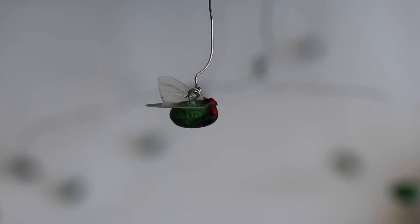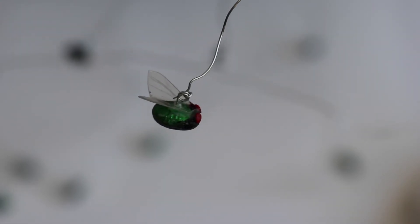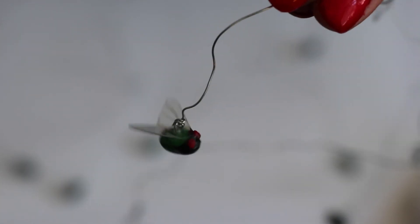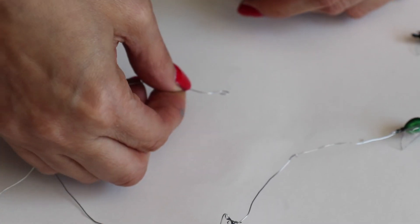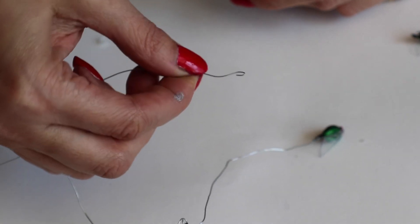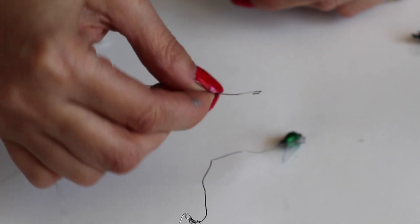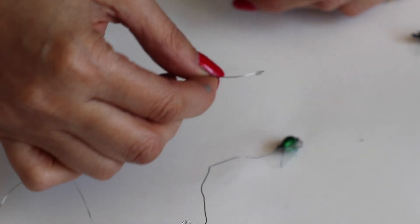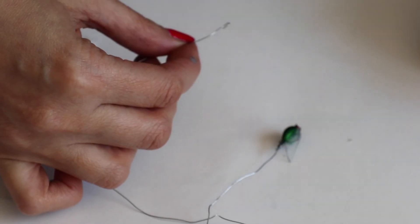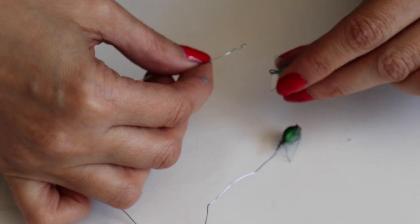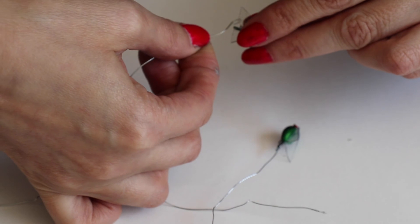To hang flies that are back mounted simply hook the ends of the mobile wire through the loop on the back of each fly. For the tail mounted flies you need a stiff connection between the fly and the mobile wire to ensure that the fly flies horizontally and doesn't hang down.